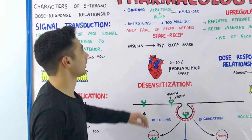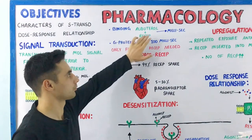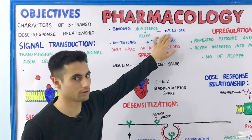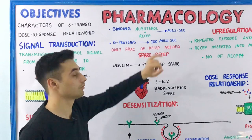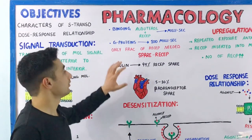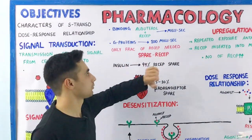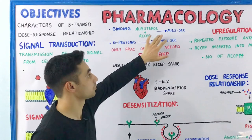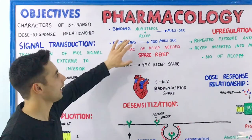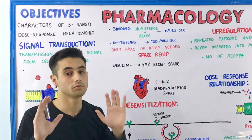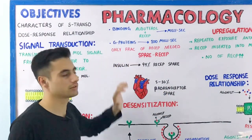Let's discuss this with another example. Albuterol is a drug — it binds with the receptor for only one millisecond. But the G proteins activated as a result of albuterol binding persist for 100 milliseconds. This is why a lot of receptors are spare; only a fraction of receptors are needed. This phenomenon is known as spare receptors or tachyphylaxis.